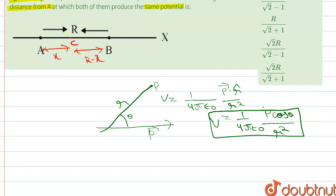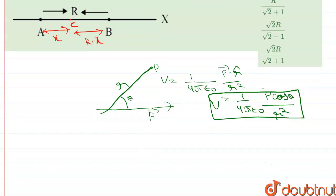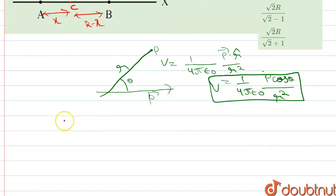Then the distance from B is r minus x. At the point, let's suppose as point C. Then at point C, V_A plus V_B equals zero.